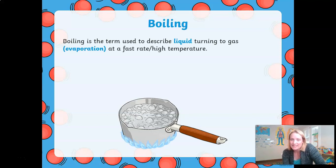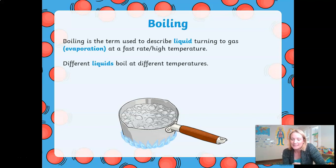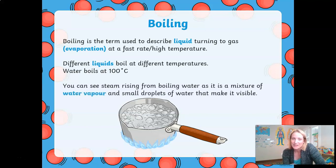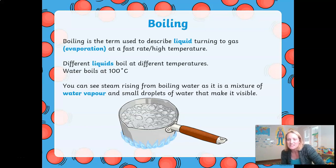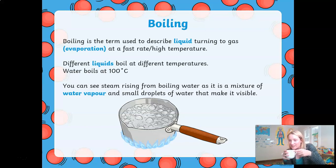Boiling is the term used to describe a liquid turning into a gas — which we've just learned is called evaporation — but boiling is done at a fast speed or high temperature. Different liquids boil at different temperatures. Water boils at 100 degrees Celsius. You can see steam rising from boiling water as it is a mixture of water vapor and small droplets of water that make it visible. You might see this when the kettle is boiling, or from a nice hot cup of tea or coffee like I have here.